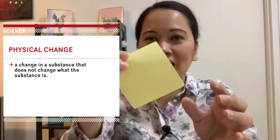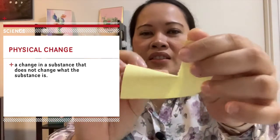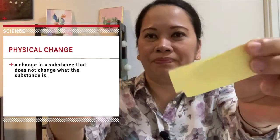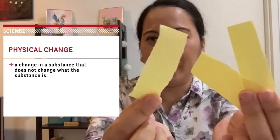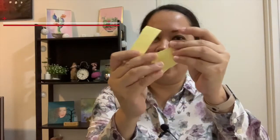Another example is this paper — if I tear it or change its shape, it is still a paper. Its chemical composition is still the same. That is what we call a physical change.